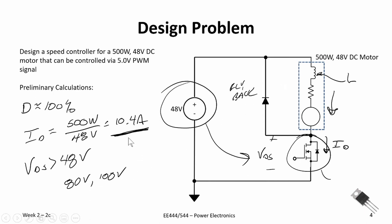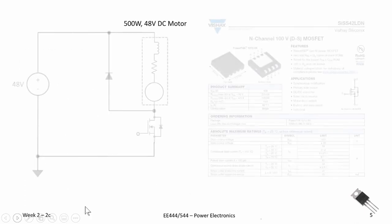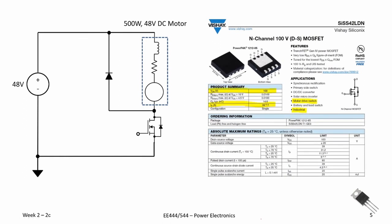So we've got I_drain must be greater than 10.4 amps, and V_DS must be greater than 48 — possibly 100 volts. Here's the MOSFET I think we can use: it's a 100-volt MOSFET, which is good, and it has a drain current of about 40 amps, which is good. We have to be careful though — is that average continuous or pulsed? We'll look deeper into this MOSFET. One thing to note: the datasheet lists motor drive switching as an application, which is encouraging.